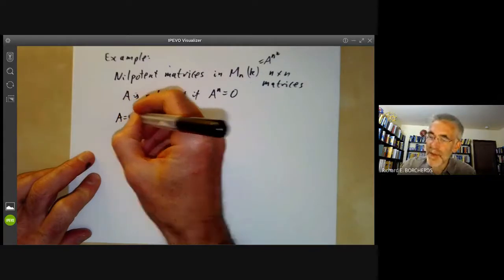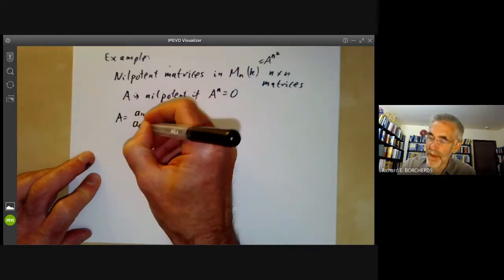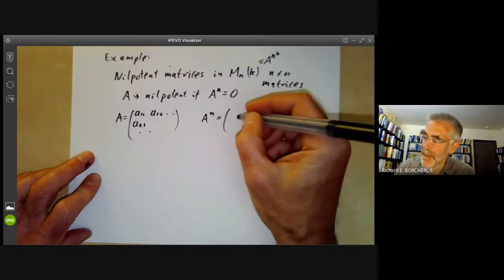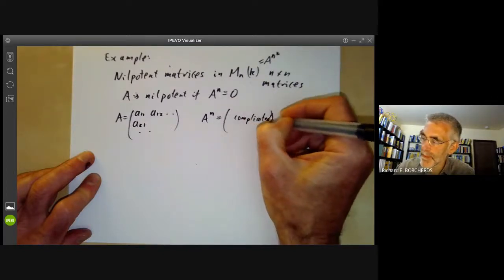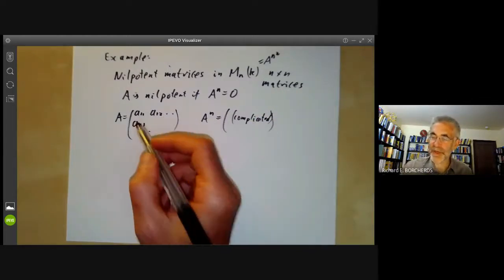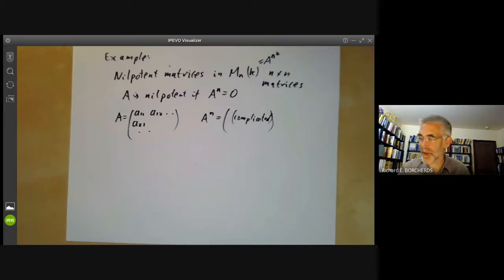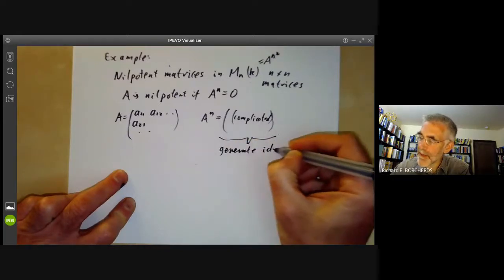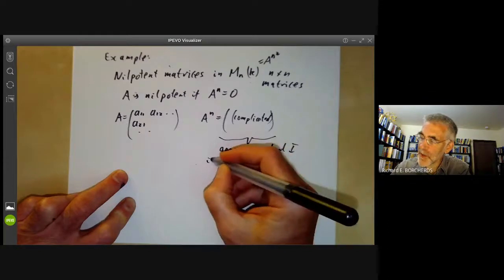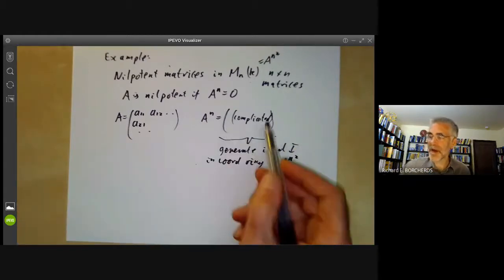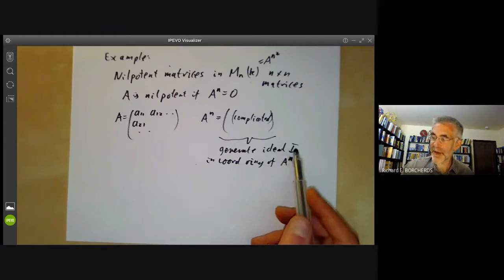So the matrices are in M_n(k), which we can think of as being affine space of dimension n^2. So we want to write down some natural equations for this matrix to be nilpotent. Well, if A is equal to (A_11, A_12) and so on. So here we have some matrix. And A^n will be something complicated. These will be some homogenous polynomials of degree n in all these coefficients here, which I'm not going to write out because they're such a horrible mess. And now we can say these generate an ideal i in the coordinate ring of A^(n^2). So we're just going to take all these coefficients of A^n and say that's going to be the ideal. And in some sense, this ideal describes the set of nilpotent matrices.